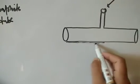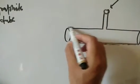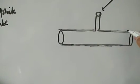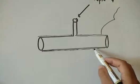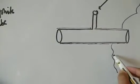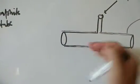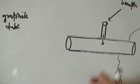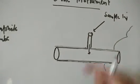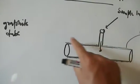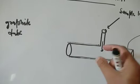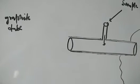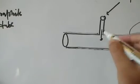The graphite tube is encased with electrical contacts. Electricity flows through these contacts, producing heat, and that heat burns the sample and converts it into the vapor state. The three heating steps happen inside the tube. The electrical setup is used to heat the sample.